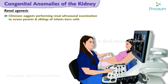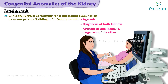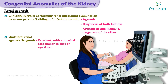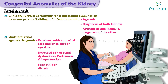Clinicians suggest performing renal ultrasound examination to screen parents and siblings of infants born with agenesis or dysgenesis of both kidneys, or with agenesis of one kidney and dysgenesis of the other, given the heritable nature of these defects. The prognosis for patients with unilateral renal agenesis is reported as excellent, with a survival rate similar to that of age- and sex-matched controls. However, some data suggests an increased risk of renal dysfunction, proteinuria, hypertension, and a high risk for dialysis.